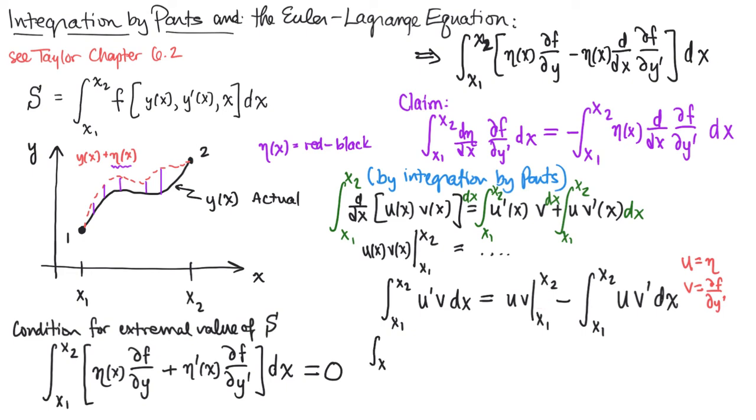So here we have integral of x1 to x2 of eta prime times the partial is equal to, we'll leave that boundary term alone for now, integral of x1 x2 times eta multiplied by the derivative of v. So why is this term zero? If it is, then our purple equation holds.